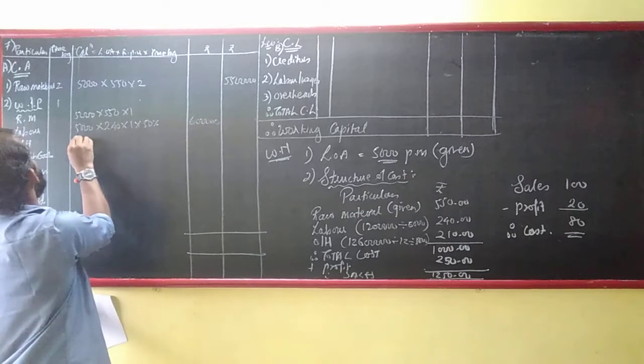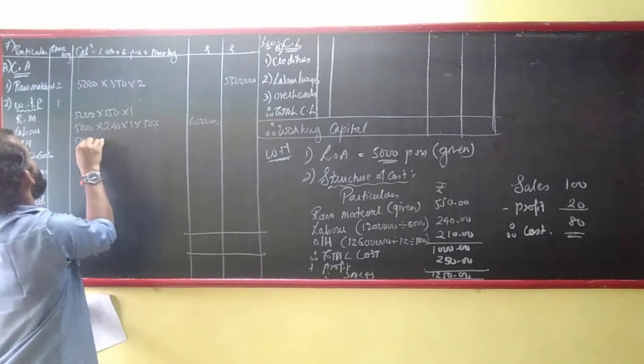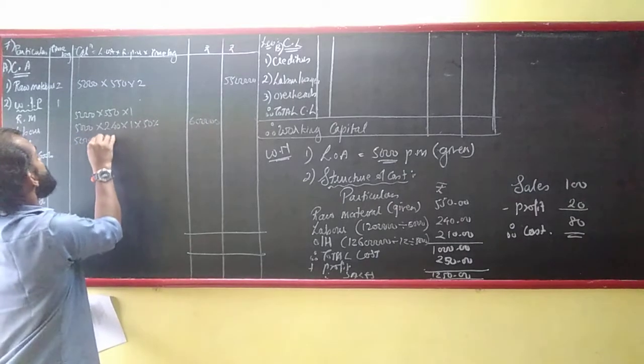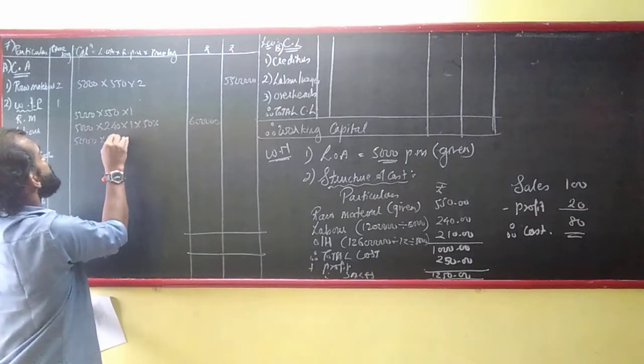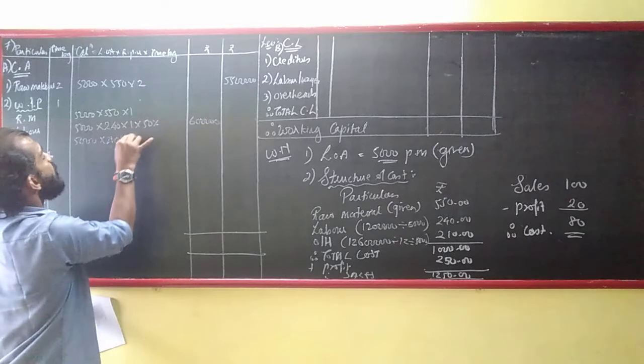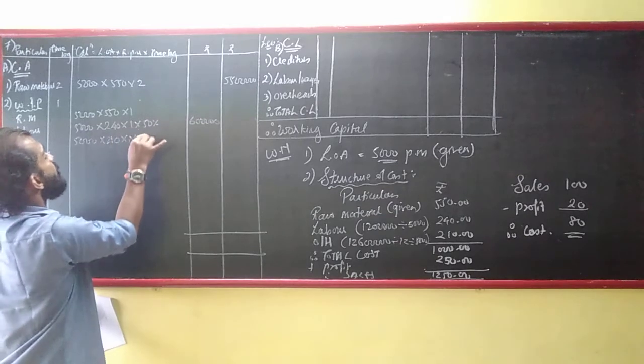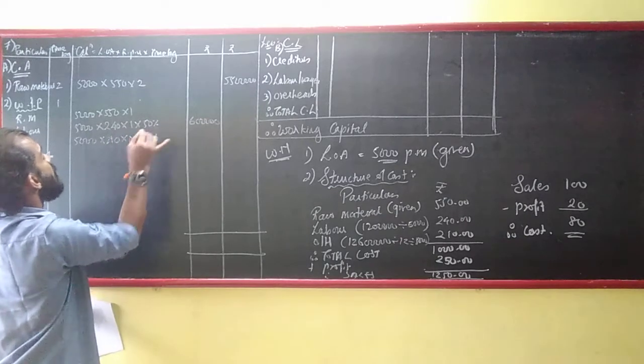For expenses in WIP: 5,000 × ₹210 × 1 × 50%.